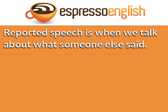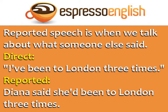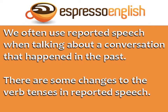Reported speech is when we talk about what someone else said in the past. For example, if your friend Diana said, 'I've been to London three times,' the reported speech is: 'Diana said she'd been to London three times.' We often use reported speech when talking about a conversation that happened in the past, but there are some changes to the verb tenses in reported speech.